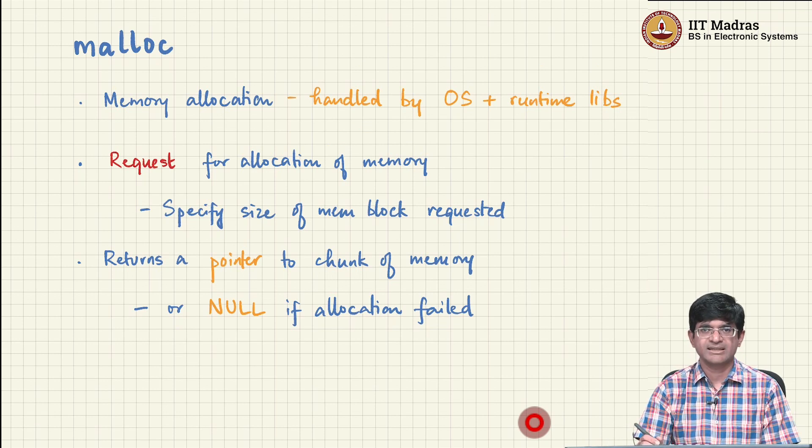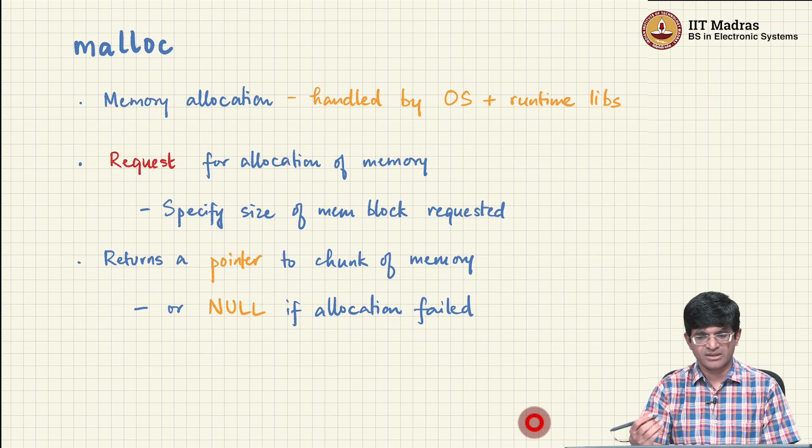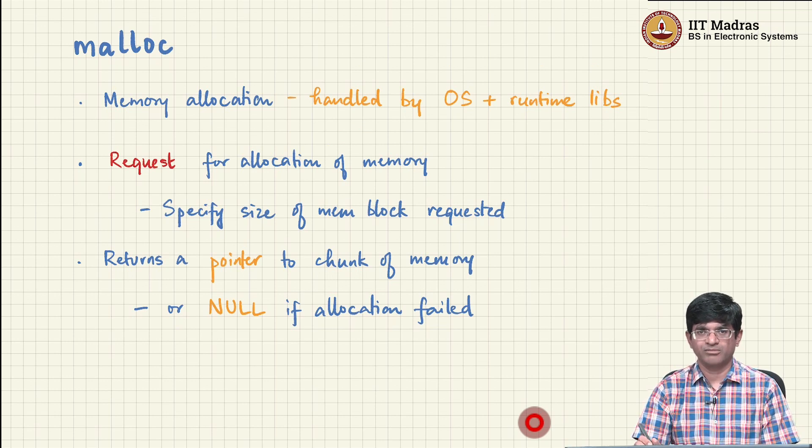What it does is that it allows you to allocate memory. Actually, what malloc does is it allows you to request memory. You can ask for a certain amount of memory to be allocated to you and the runtime, which is whatever code corresponds to actually implementing the malloc function, will interact with the operating system, ask for a certain amount of memory, reserve that for you and give you a pointer corresponding to that memory. What you need to specify is the size of the memory block that you need. So, let us say you only want space for storing one integer, that is fine, you can ask for 4 bytes of memory. If you want to store a million integers, go ahead and ask for 4 megabytes of memory.